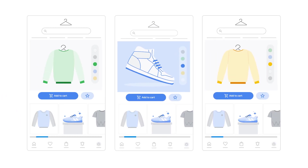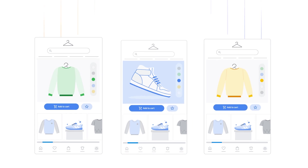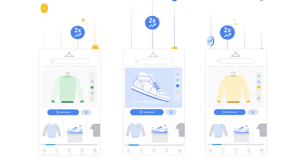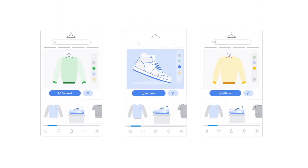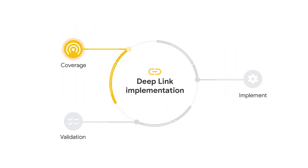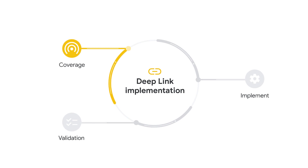We've seen that, on average, advertisers who have implemented deep linking are seeing over two times uplift in conversion rate. The deep link implementation cycle starts with coverage, where you need to know which deep links are missing in your app and what is the added value from implementing those deep links.